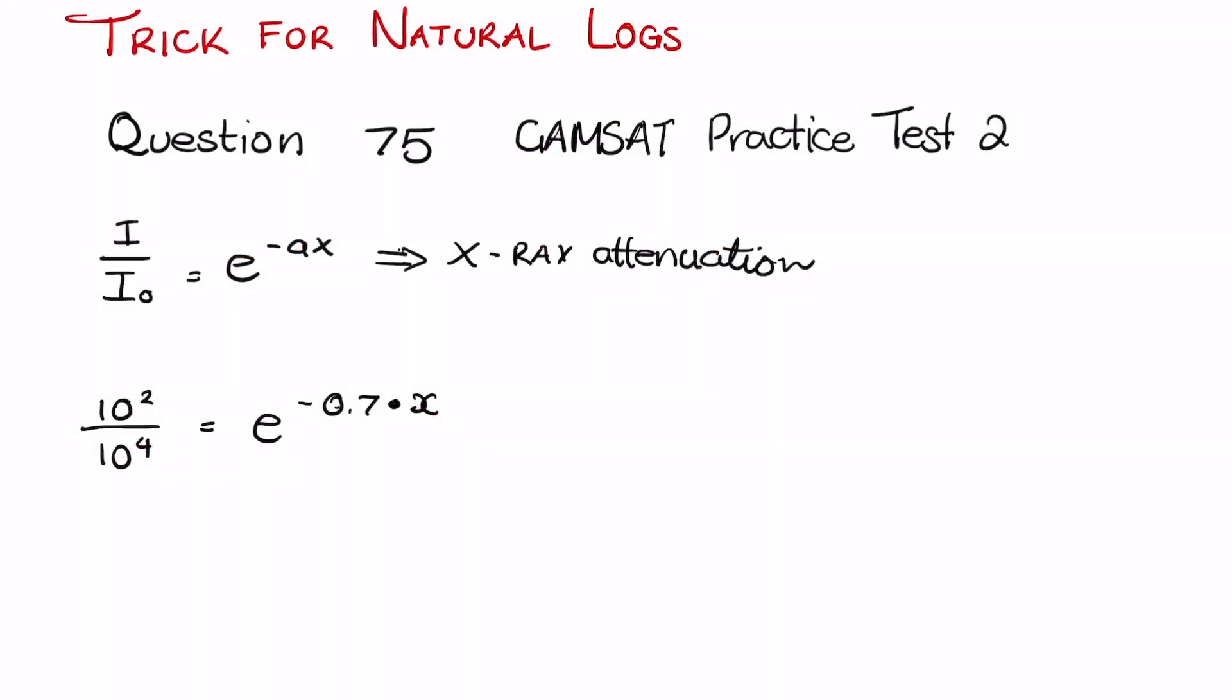So as I said earlier in the video, sometimes you'll come across natural logs. We typically see this in the form as ln x, so ln(2×10³) for example. If you guys want an actual practice test example, look at question 75 in the GAMSAT practice test 2 or the purple booklet and you'll see an x-ray attenuation question. Essentially what they give you is I/I₀ = e⁻ᵃˣ, and e is just one form of a natural log.